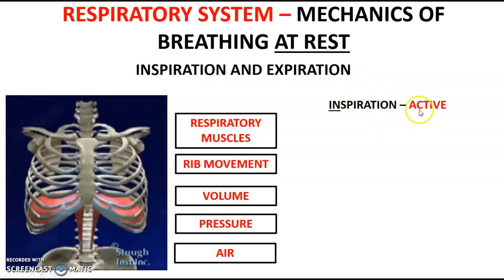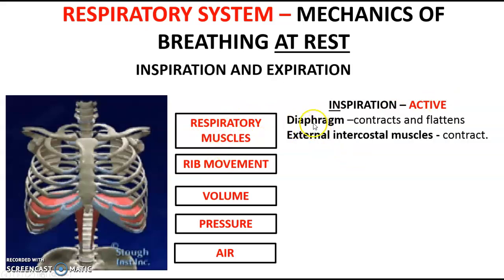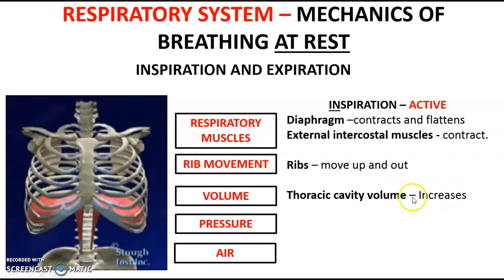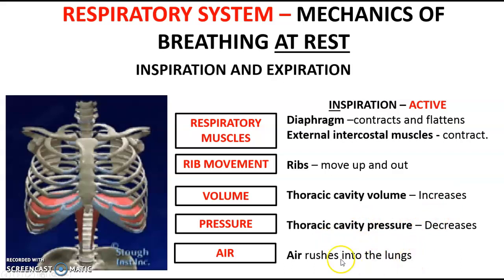Starting with inspiration — the process of breathing in. Inspiration is an active process, meaning the respiratory muscles contract to move the ribs. The two specific respiratory muscles are the diaphragm and the external intercostal muscles. The diaphragm contracts and flattens, pushing the ribs up and out. As a result, the thoracic cavity volume increases — there's more space inside the rib cage. Because of this increased space, air is at a lower pressure. The decrease in pressure means air rushes into the lungs. You must make sure you note the air direction at the end of that.